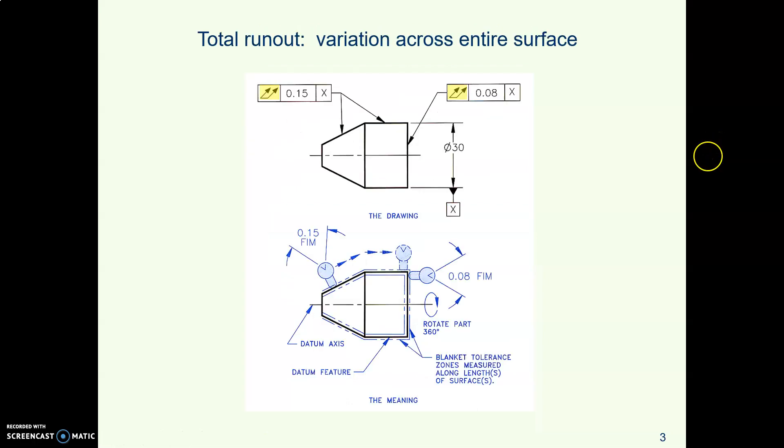With total runout we're controlling and measuring the variation across the entire surface. Here is the back flat surface of this rotating part. As the part rotates, that indicator will be moved back and forth covering that whole flat surface. Here on the cylindrical part the indicator goes back and forth, and on the tapered part the indicator goes back and forth along the taper as the part is spinning.